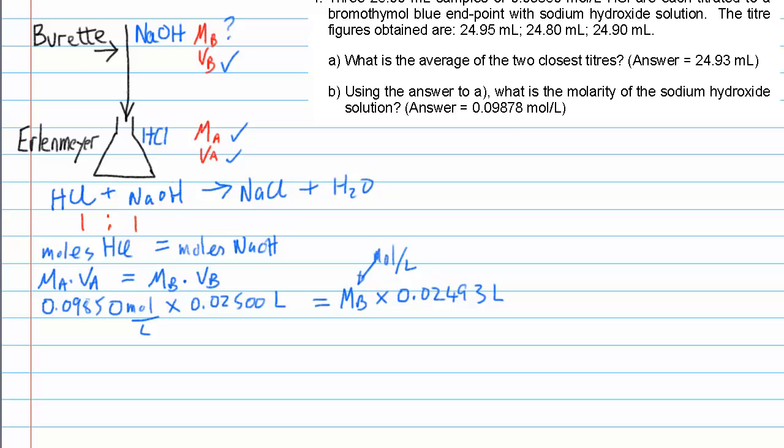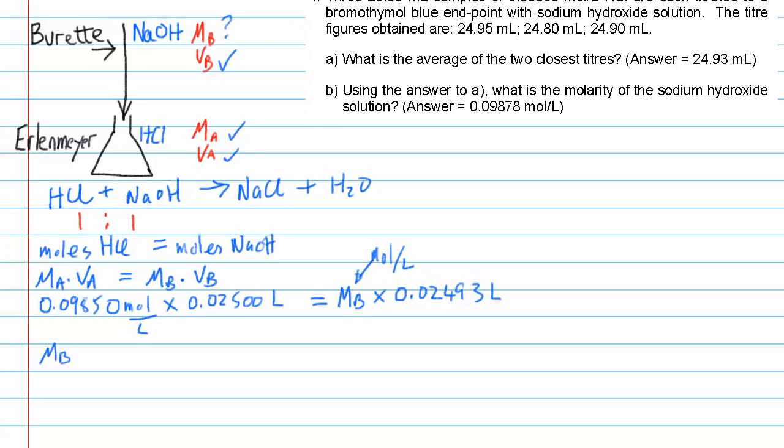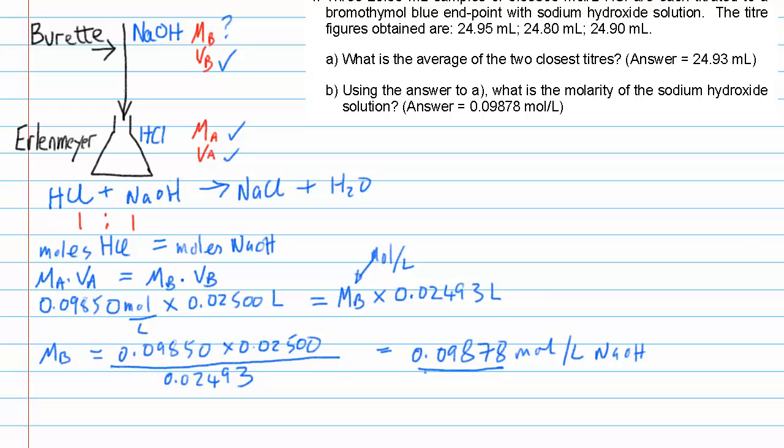Rearranging the equation, we can say that the molarity of the base is therefore equal to 0.09850 times 0.02500 divided by 0.02493. If we plug these numbers into our calculator, we'll find that the result is equal to 0.09878 moles per liter of sodium hydroxide. If we follow the rules of significant figures properly, this must be reported as it is here to four significant figures, and in this case, that happens to be five decimal places of precision.